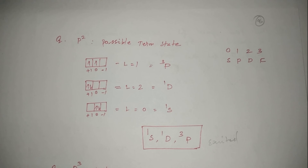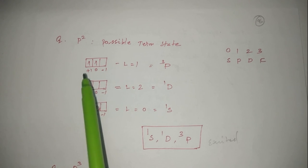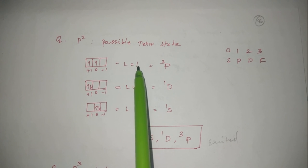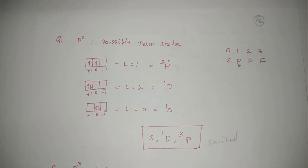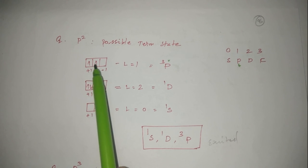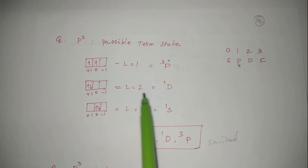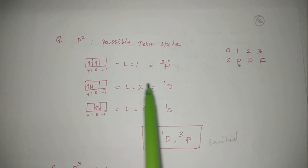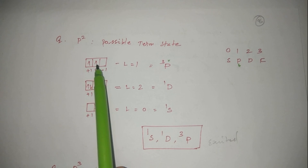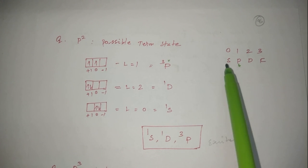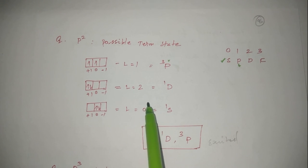For the p² configuration, find the possible excited state term symbols. Two electrons in p orbitals: with both electrons unpaired (one each in separate orbitals), L=1 and 2 unpaired electrons give ³P. Next excited state: electrons pair up giving L=2, no unpaired electrons, so ¹D. Then electrons pair fully giving L=0, no unpaired electrons, so ¹S. These are the possible terms for p² configuration.